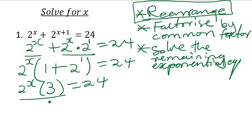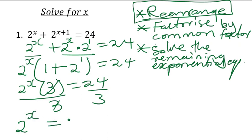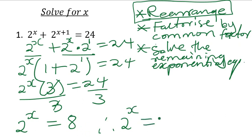We divide both sides by 3, because we don't need that 3 there. So 3 and 3 cancel, and what we are having is 2^x equals 24 divided by 3, which gives us 8. So 2^x equals 8. We write 8 in exponential form: that is 2^3. As a result, the bases are the same, we equate the exponents, so therefore x equals 3.